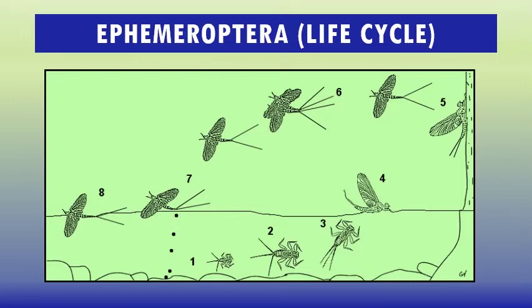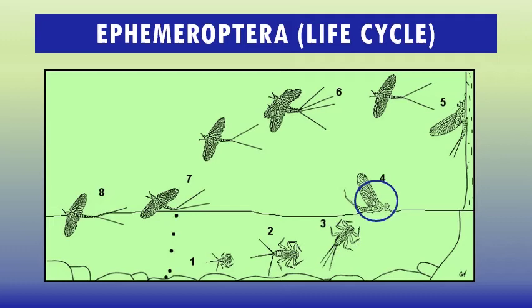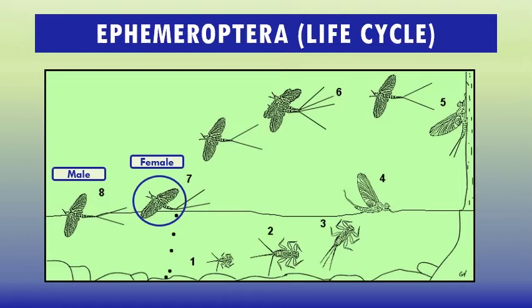Now the life cycle of Ephemeroptera. It begins with egg laying, followed by the first molt into the first instar nymph, then the second, third, fourth, fifth, sixth, and seventh instars. After the last stage, the female lays eggs and the male dies very soon.